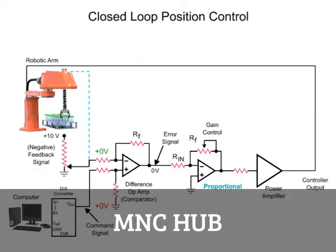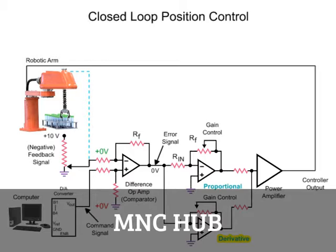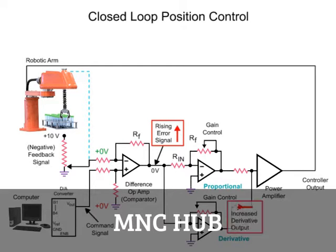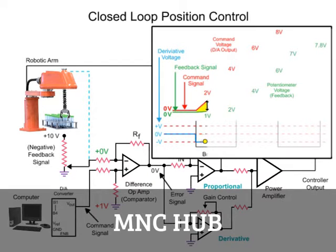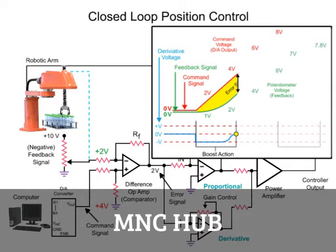To achieve a fast response time and minimize overshoot of the desired position, a derivative amplifier is added to the circuit. The derivative amplifier produces an output while the signal applied to its input is changing. As the arm lags behind the command signal, the error signal causes the derivative amplifier to produce a voltage that adds to the output of the proportional amplifier. The sum of both voltages is applied to the power amp, resulting in the robotic arm accelerating at a similar rate to the changing command signal. The error becomes constant when the potentiometer indicates the arm's position is changing at a constant rate of the command signal, at which point the derivative voltage changes to zero volts and the proportional amplifier continues to produce a voltage.